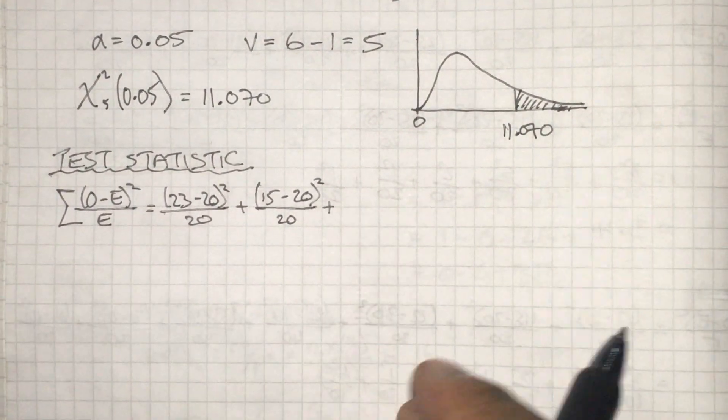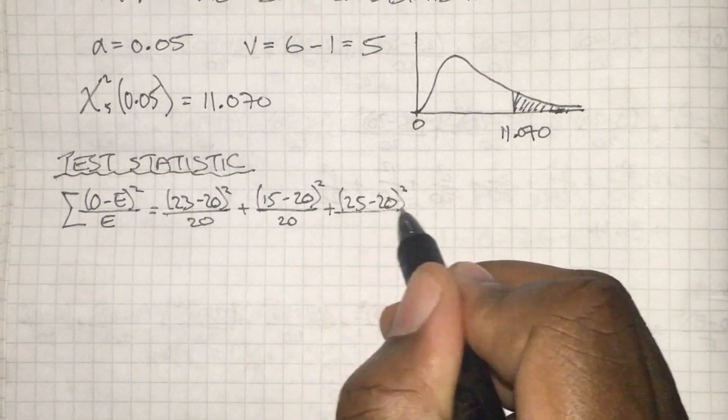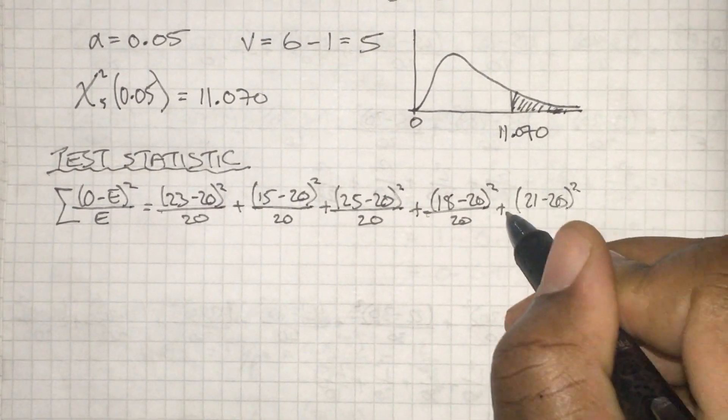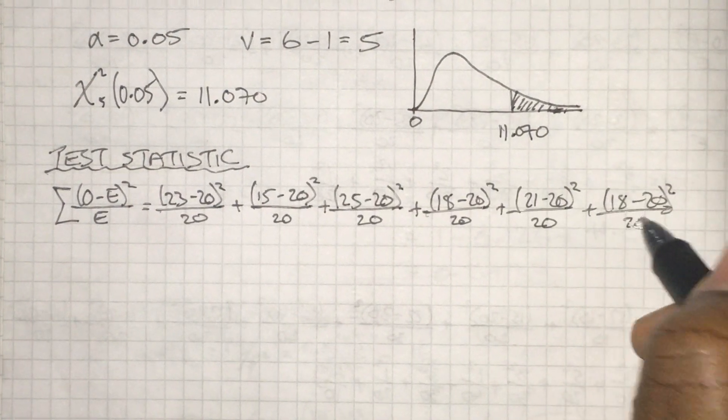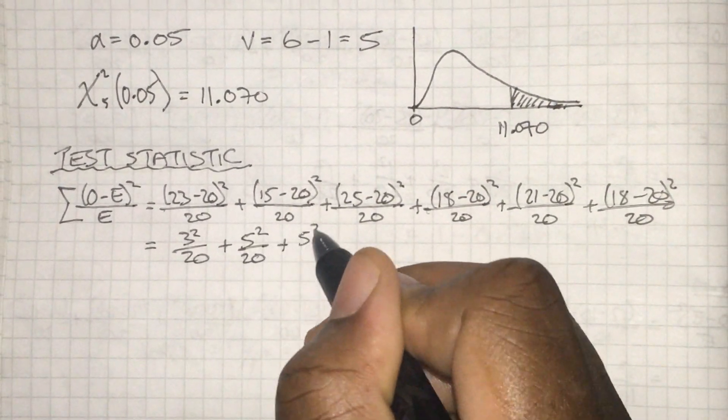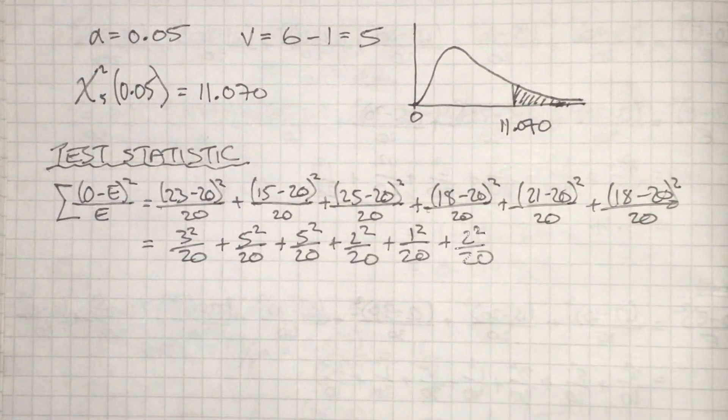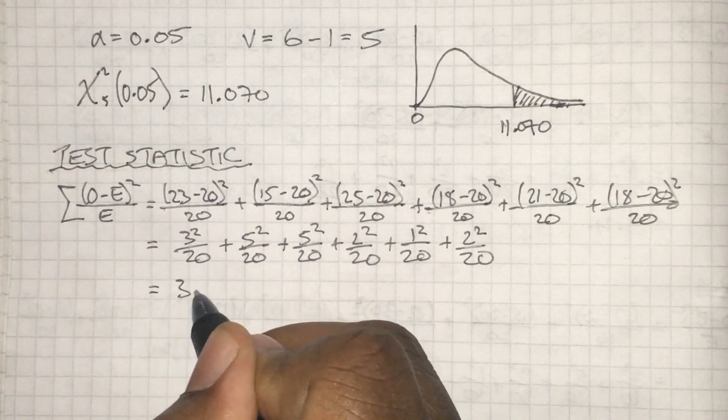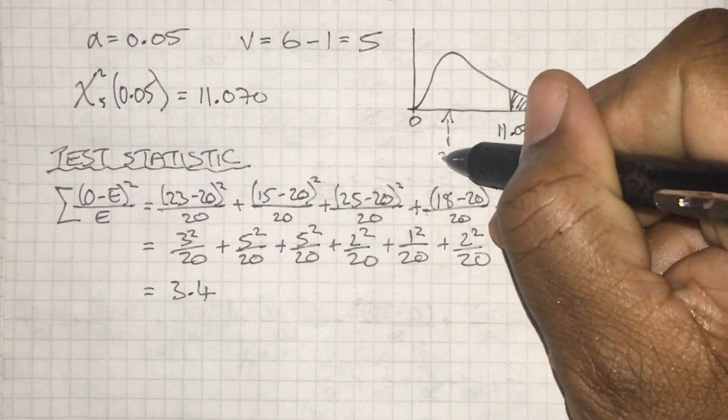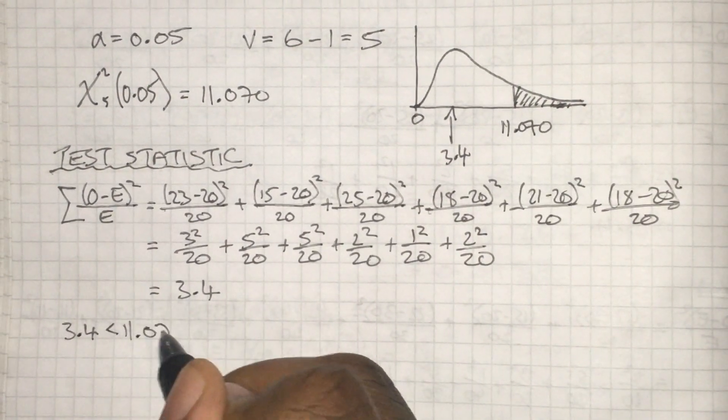Let's go ahead and calculate our test statistic. Just as we did before, the observed minus the expected, we're going to square that and divide by the expected. We'll do that for all of the corresponding pairs of observed and expected values. Trying out the whole calculation, simplifying a little so I can track my working out, and we get 3.4.